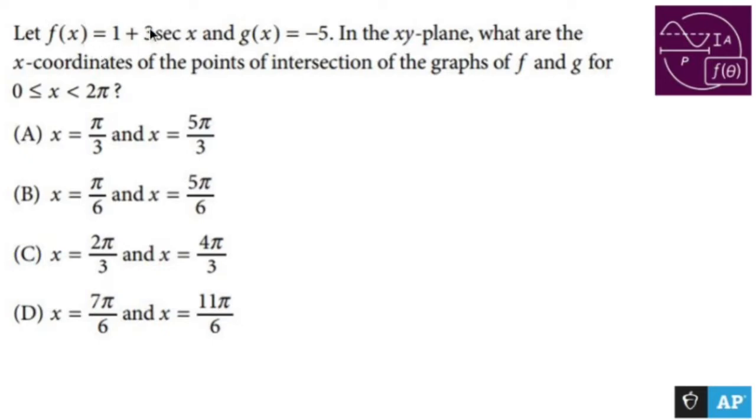Let f(x) equal 1 plus 3 secant x and g(x) equal negative 5. In the xy-plane, what are the x-coordinates of the points of intersection of the graphs of f and g for the bounds between 0 and 2π?